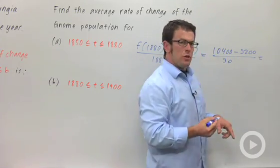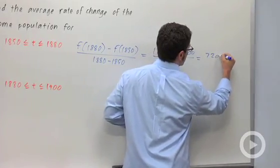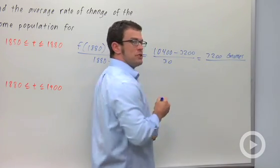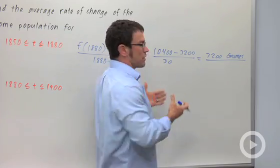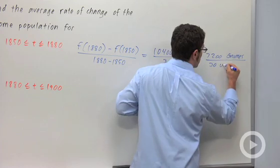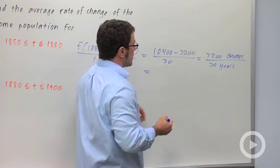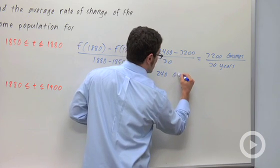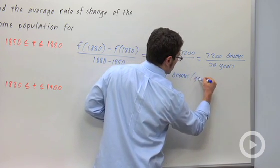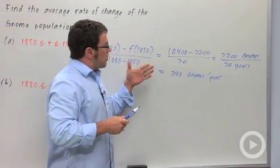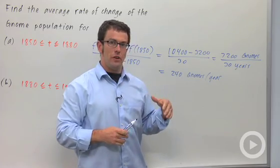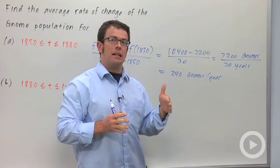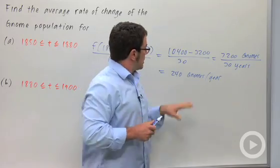10,400 minus 3,200 is 7,200 gnomes — and we've got to remember units, because when you're dealing with average rate of change, the units will tell you what the average rate of change actually means. So this is 30 years. 72 divided by 3 is 24, so this would be 240 gnomes per year. The population increased by 7,200 in that 30-year period; 240 gnomes per year is how fast the gnome population would have to grow at a constant rate to make up that increase.